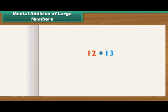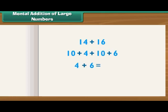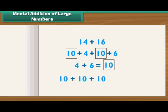Let us use a different technique for mental addition of two large numbers. In this technique, we break the numbers into tens and ones and then add. Write 14 + 16 as 10 + 4 + 10 + 6. 4 + 6 = 10. We now have three tens. Add them: 10 + 10 + 10 = 30. Therefore, 14 + 16 = 30.